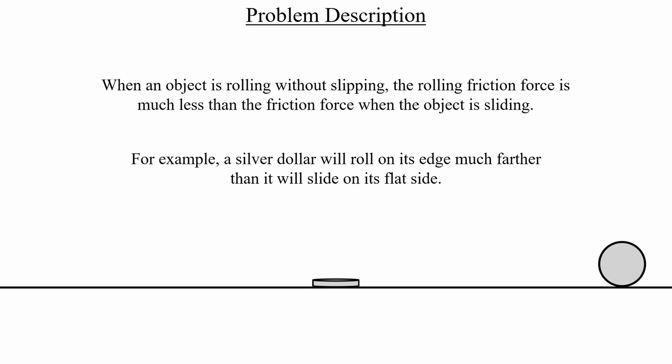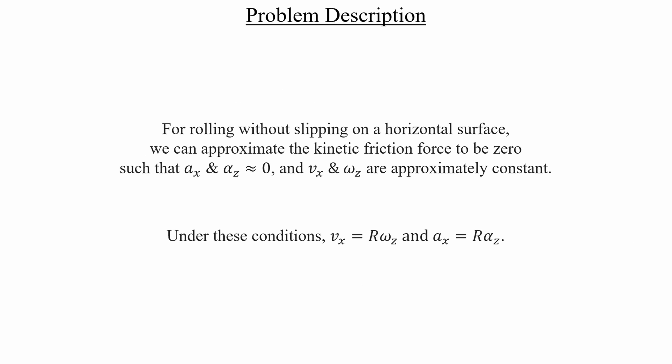The problem states this quantitatively by saying that whenever we have rolling without slipping, the kinetic friction acting on the object is approximately zero. This means that the linear and angular accelerations are also approximately zero, and the center of mass velocity and angular speed will be constant. And we're given two equations down at the bottom showing how these quantities are related to one another. That covers the case of rolling without slipping.